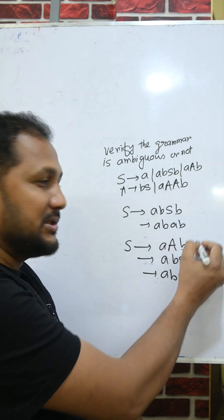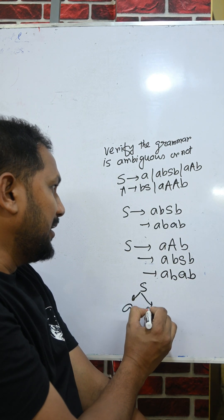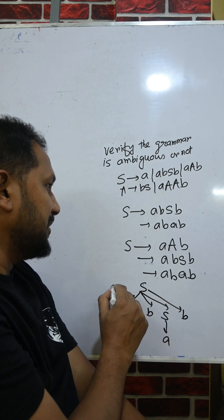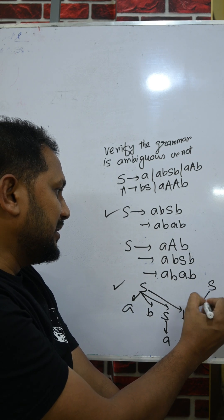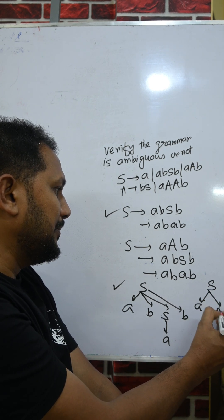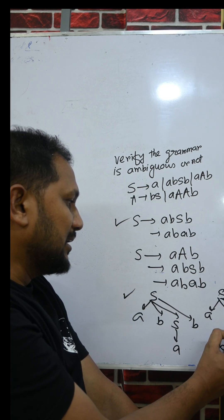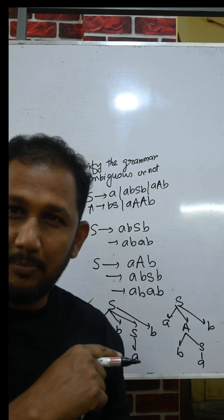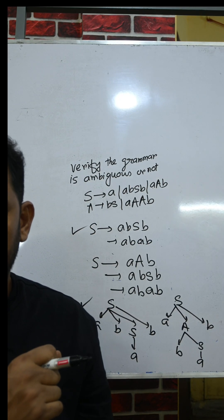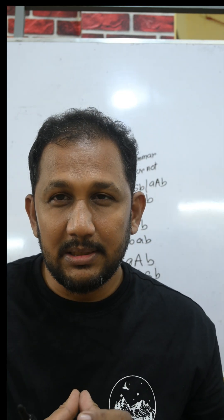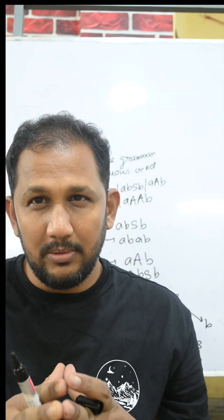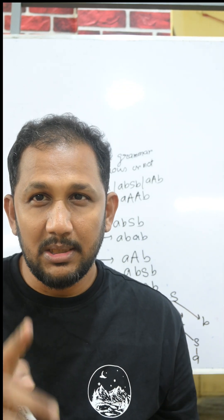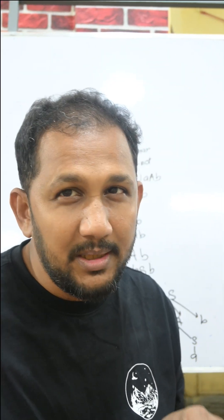Now we need to draw the parse trees for these two different derivations. The parse tree for the first derivation and the parse tree for the second derivation both produce abab, but they have different structures. We can therefore say the grammar is ambiguous — for the same string abab there are two different parse trees. Thank you very much for watching this video, please share and subscribe.